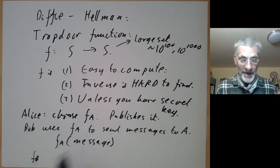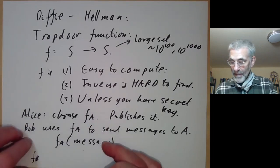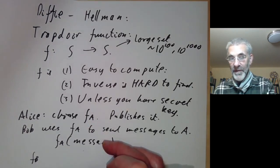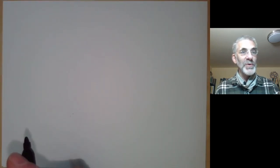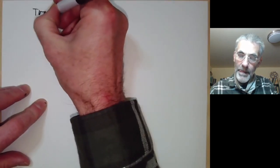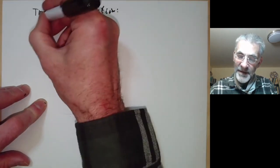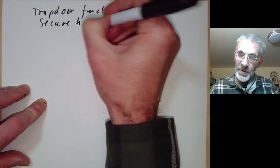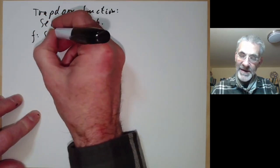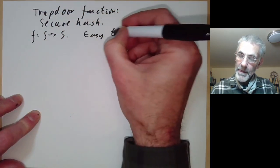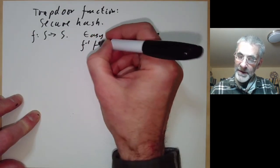There's a problem here: we need to actually have a trapdoor function. First of all, there's a difference between a trapdoor function and a secure hash function. Trapdoor functions and secure hashes are very similar—they're both functions from some set S to itself that are easy to compute and the inverse is hard to compute.